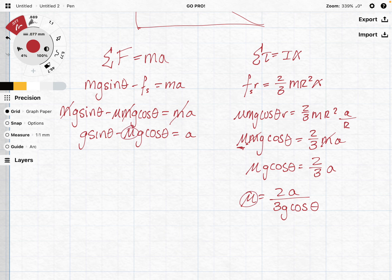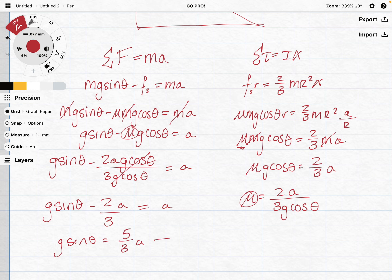Then I have g sine theta minus two a g cosine theta over three g cosine theta, and we can see that my g cosine theta will be gone. That's all equal to a. Now I have g sine theta minus two thirds a equals a, and so then I can say g sine theta equals five thirds a, or a equals three fifths g sine theta.